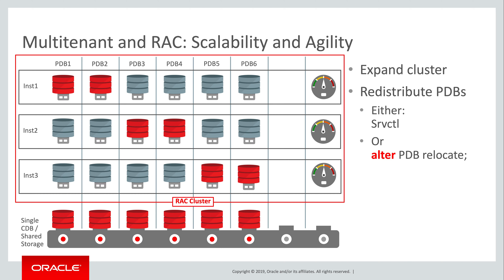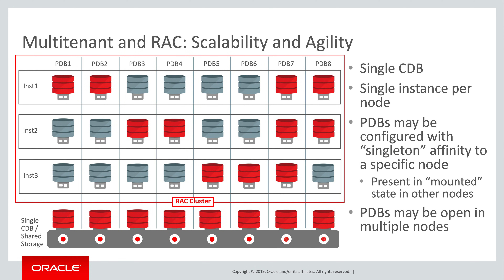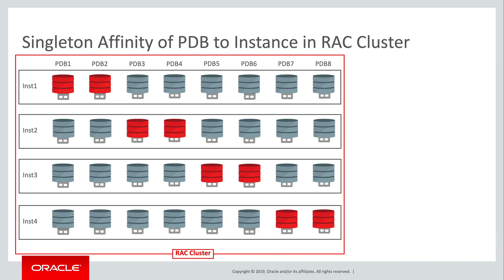So far, we've seen what is described as singleton affinity — in other words, each PDB is open only in a single instance, and present only in mounted state in other nodes. It's also possible for a PDB to be open in more than one node, or even all nodes. For example, PDB7 is open on all nodes, and PDB8 is open in nodes 1 and 2. In general, however, singleton affinity is a very good model to follow, as we shall now see.